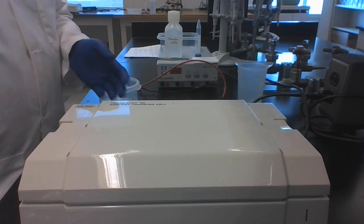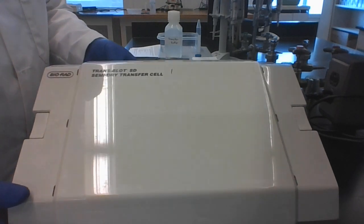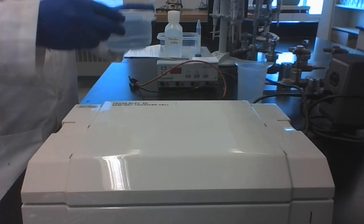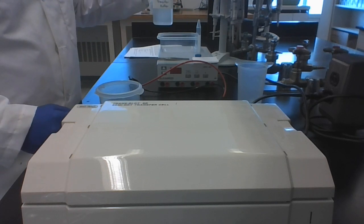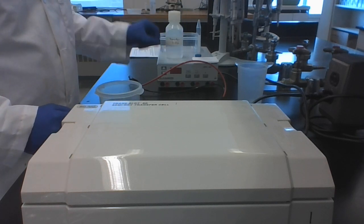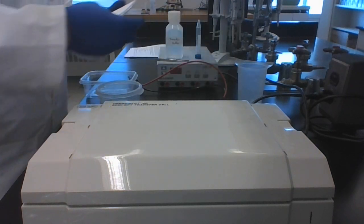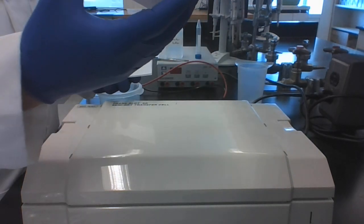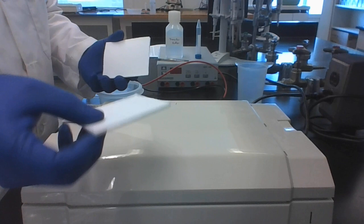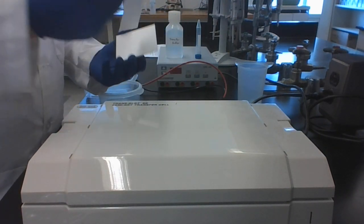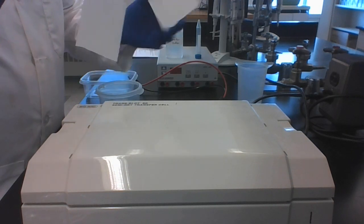So we have a few things. We have our gel, which is soaking in water here. We have transfer buffer, forceps, an extra tray, and then we have some filter paper, our nitrocellulose membrane which is here, and then we have another filter paper.